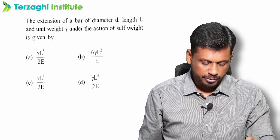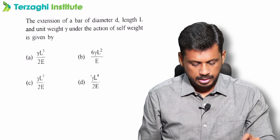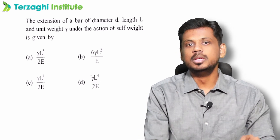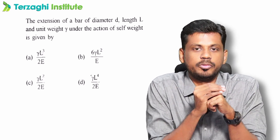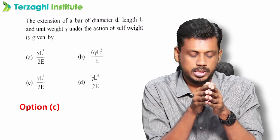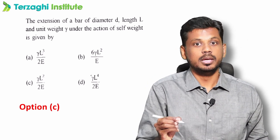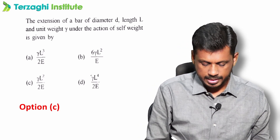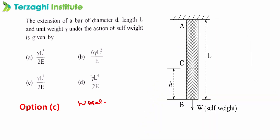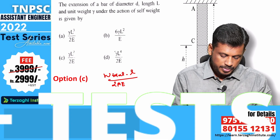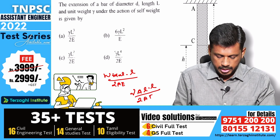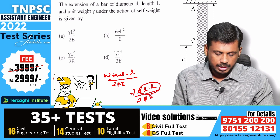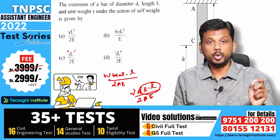The extension of a bar of diameter D, length L, and unit weight gamma under the action of self-weight is given by gamma L squared divided by 2E. This is the derivation from Unit 1. The final answer is gamma L squared divided by 2E. Alternatively, if expressed as total weight W: it is W times L divided by 2AE. In the W total form, unit weight times area times length divided by 2E — area cancels — giving gamma L squared divided by 2E.